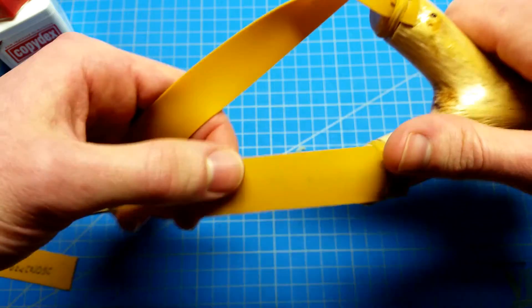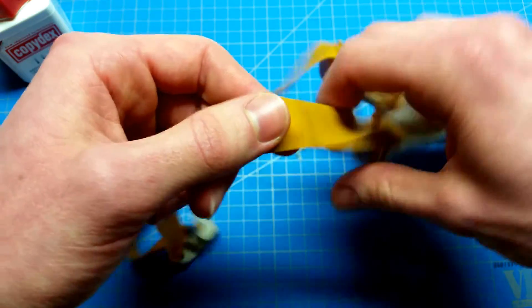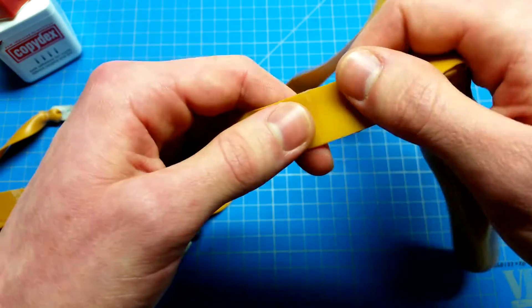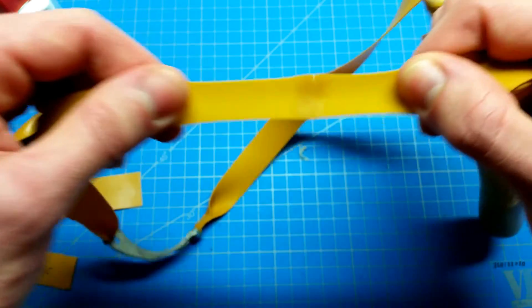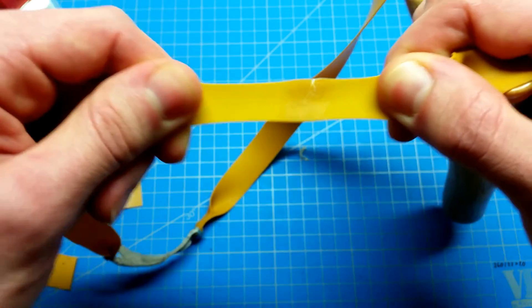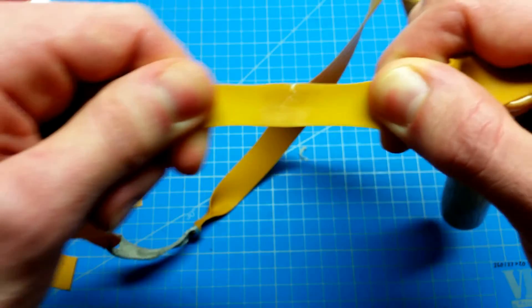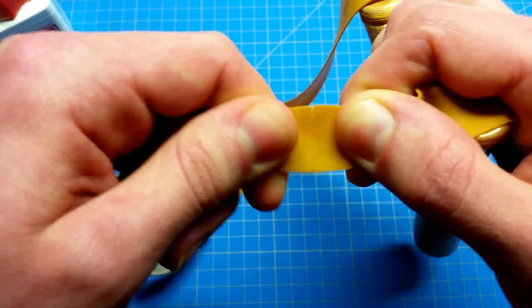I had one band set where the Thera-Band ripped in the middle, and I repaired it with Copidex. Here in between, this band was in two pieces, and I just glued it together.